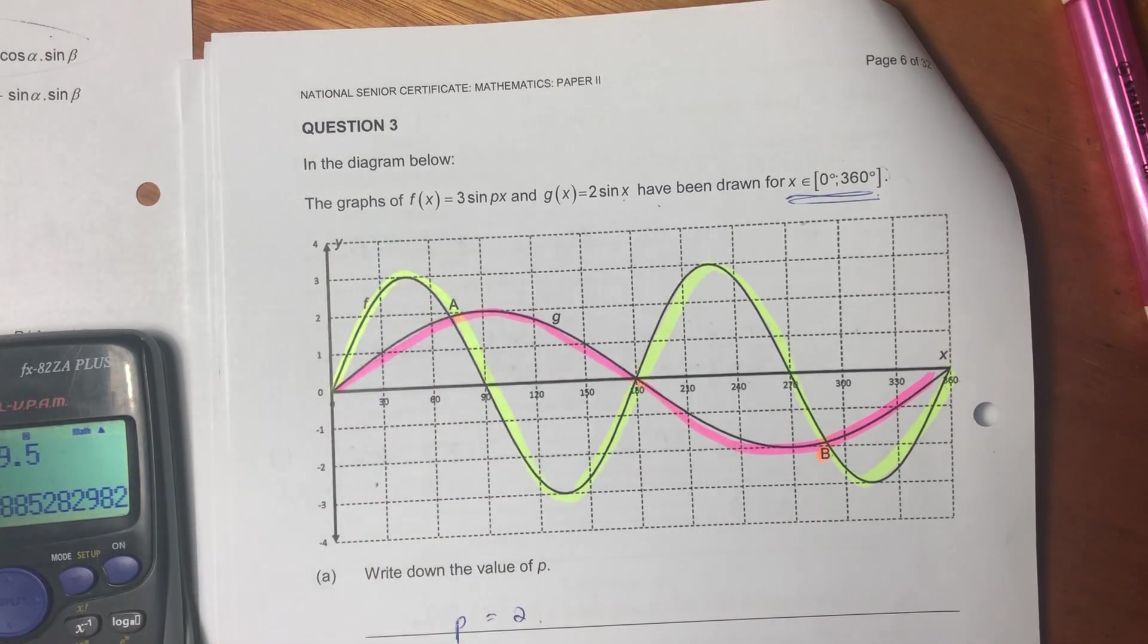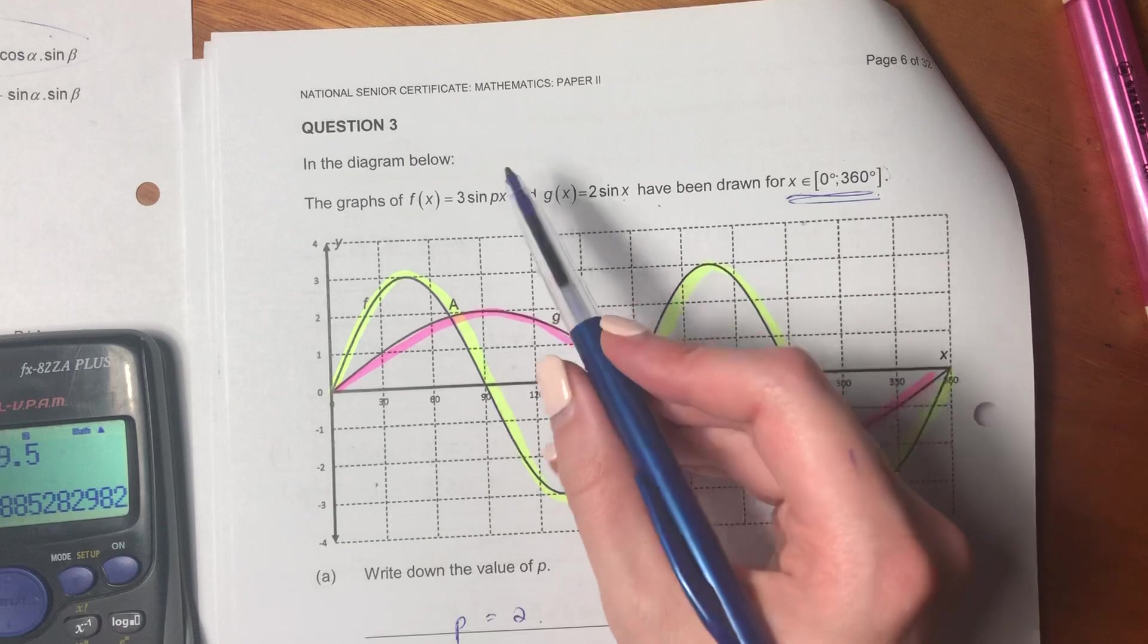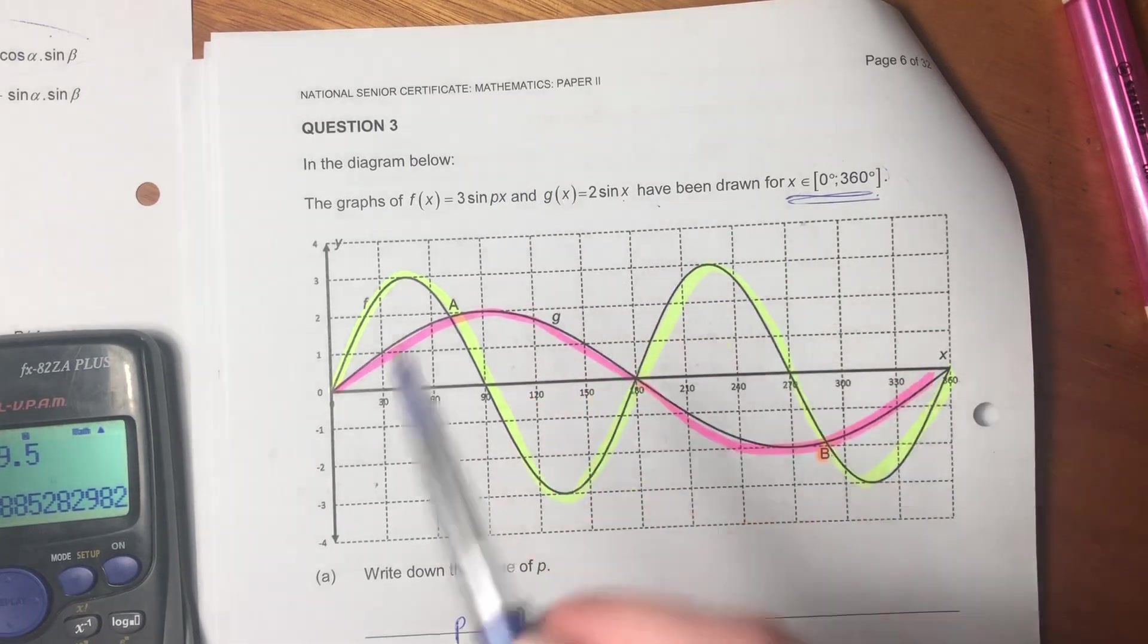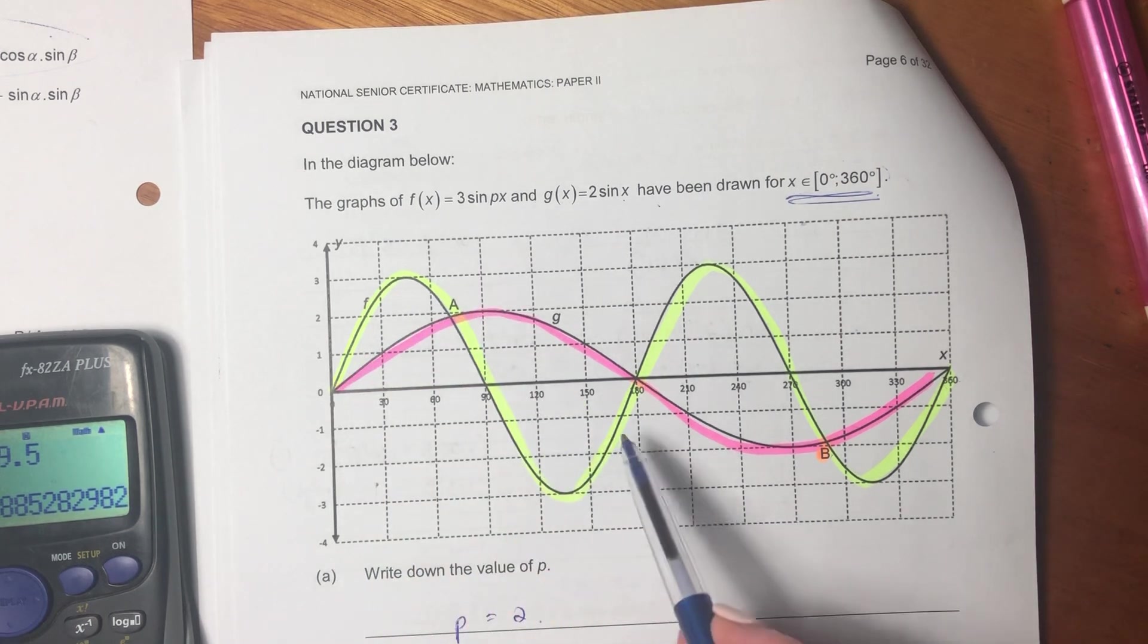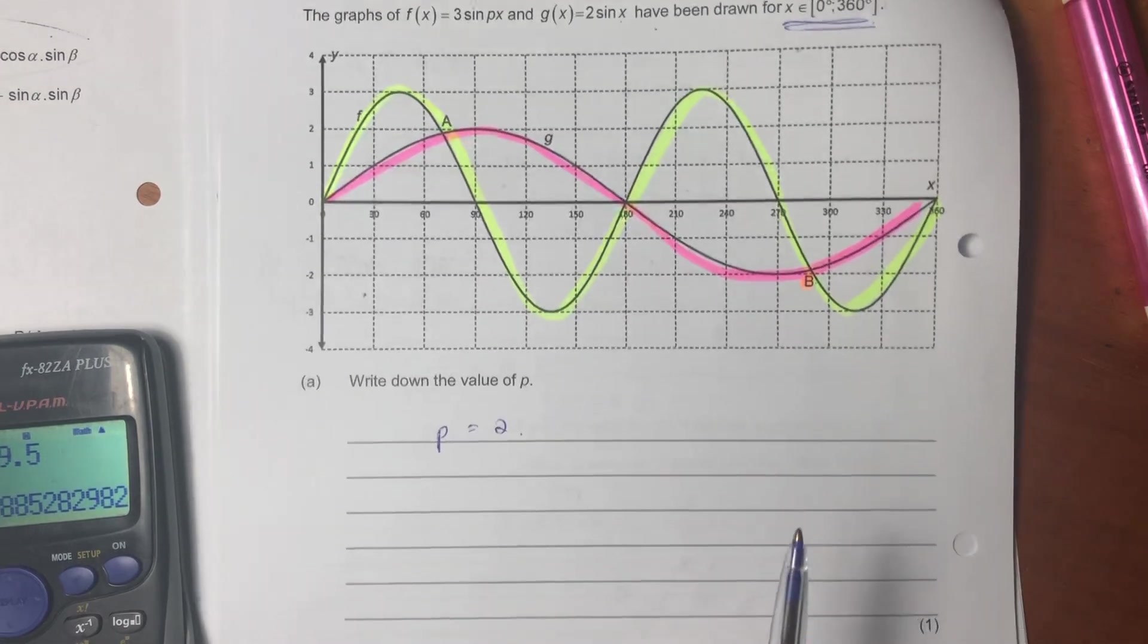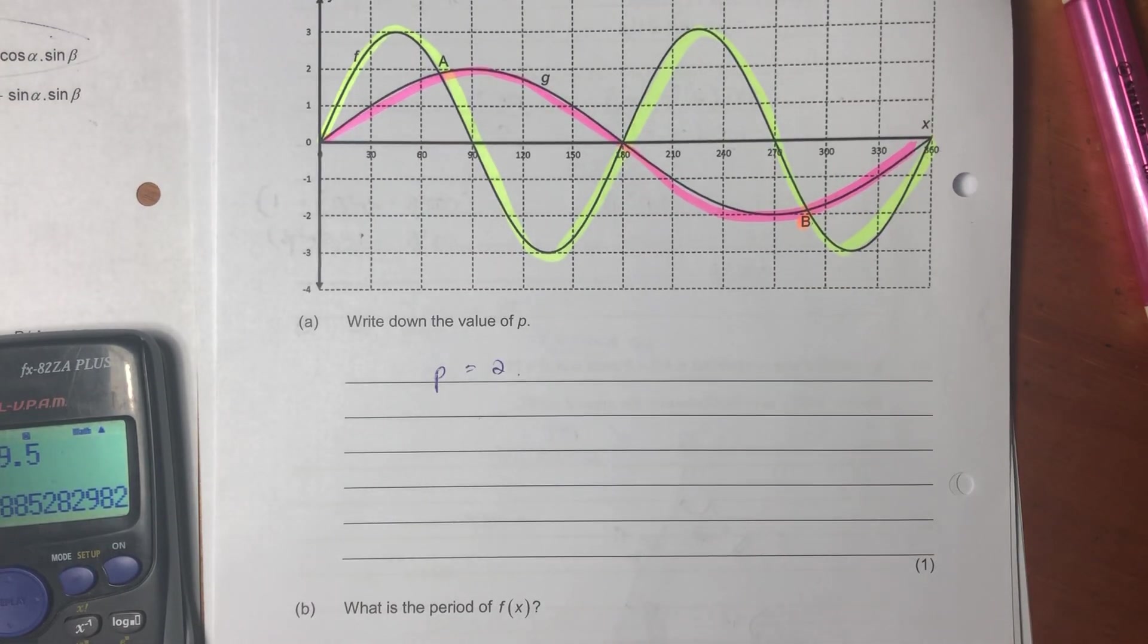What we can see is that f repeats itself twice in this 360, whereas g of x only has one wave. Remember that a sine graph, if it doesn't have a coefficient over there, if the coefficient is just 1, like we see over here in front of this x, it repeats itself only once every 360. So it says here, write down the value of p. p effectively says, how often does the graph repeat itself in 360? Well, we see that it repeats itself twice. Therefore, p equals 2.